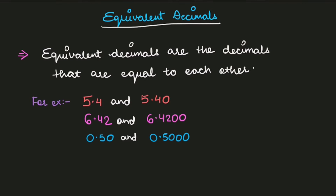So what does it mean? In the case of decimals, there is a point, so we need to look after the point. In the first example, we have 5.4 and 5.40. Now you might say that these two are unlike because there are an unequal number of digits. So how are they equivalent?